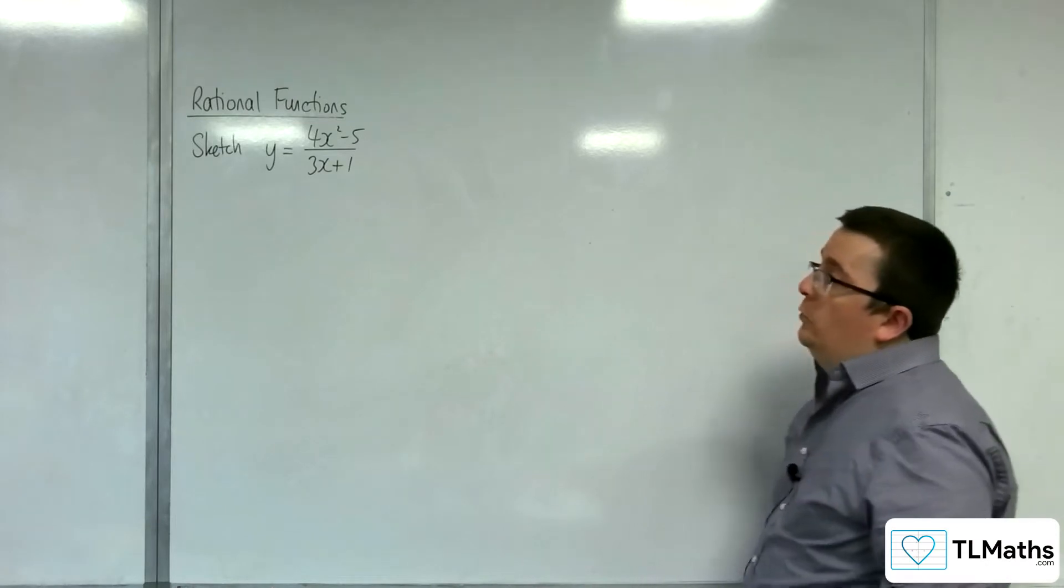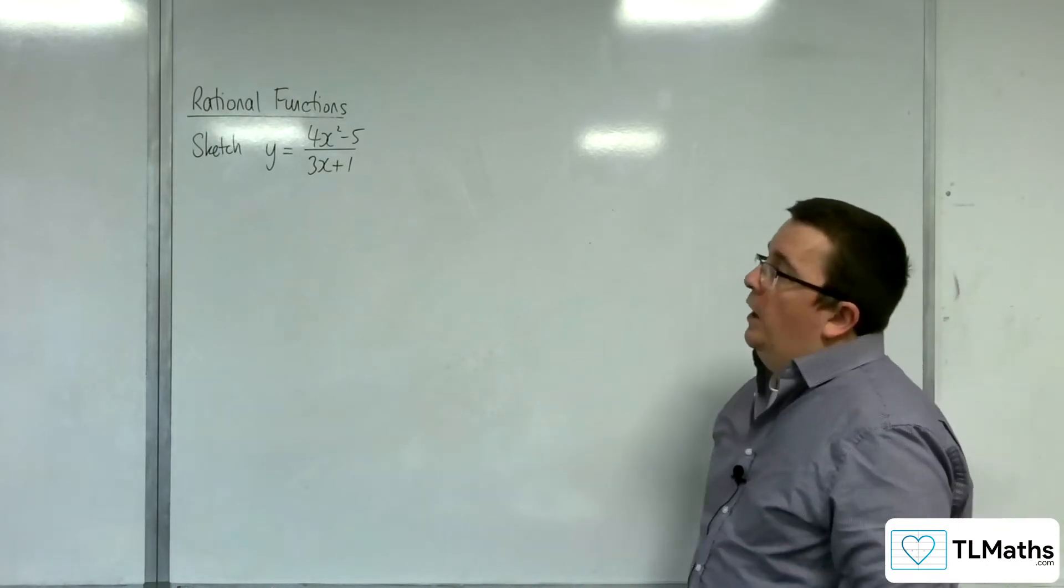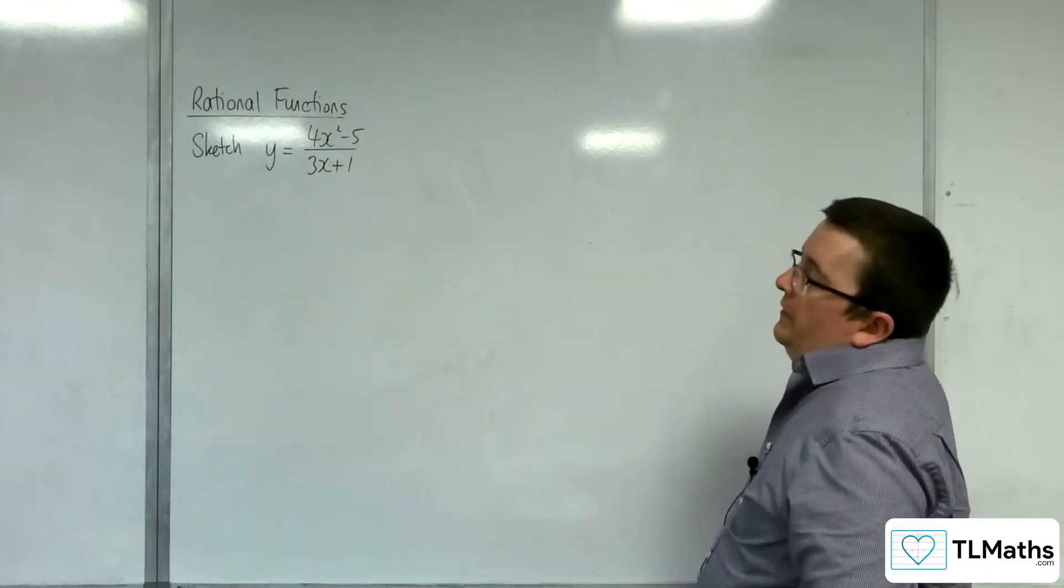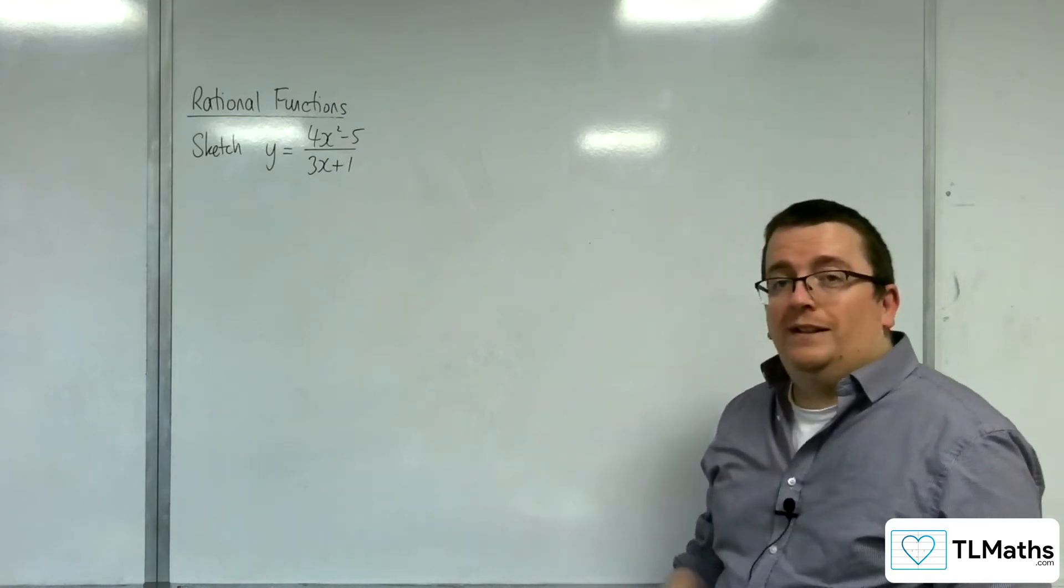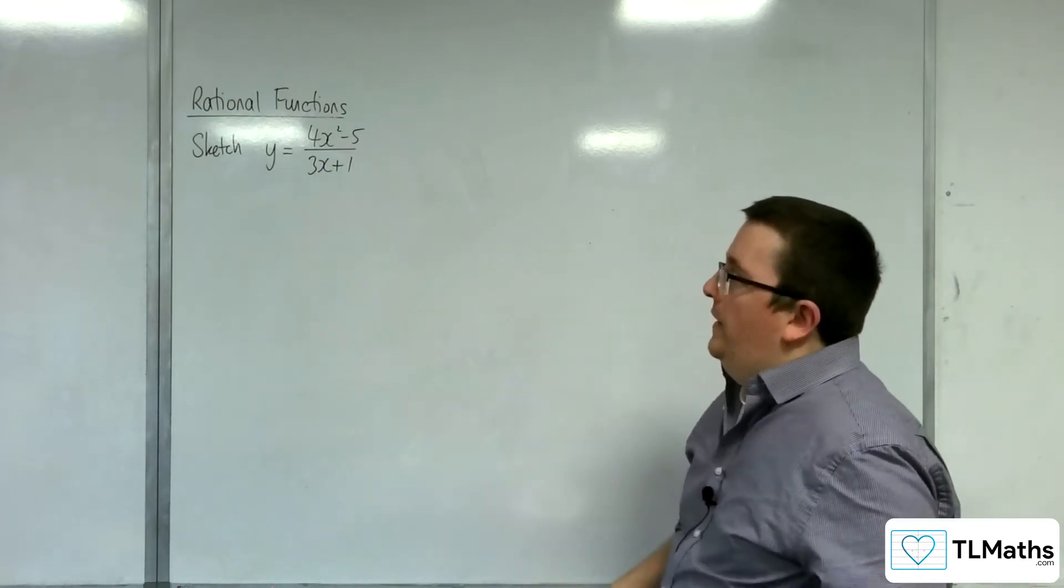In this video I'm going to be sketching y equals 4x squared take away 5 over 3x plus 1. Now the first thing you want to check is can you factorise that numerator. Now it doesn't neatly factorise.